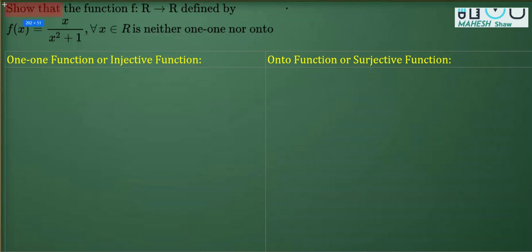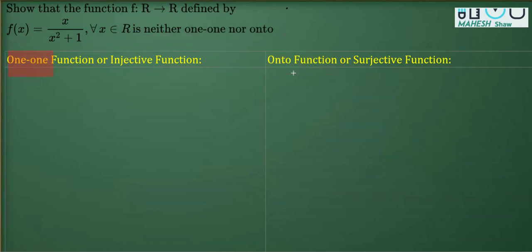The question says: show that the function f from ℝ to ℝ, with domain all real numbers and range all real numbers, defined by f(x) = x/(x²+1) for x belonging to all real numbers. We have to show that the function is neither one-one nor onto.